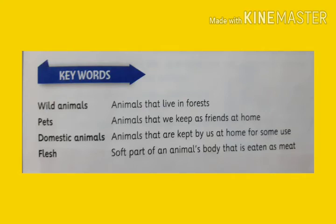Let's remember some key words. Wild animals: animals that live in forests. Pets: animals that we keep as friends at home. Domestic animals: animals that are kept by us at home for some use. Flesh: the soft part of an animal's body that is eaten as meat.